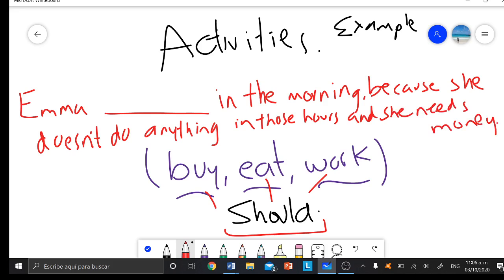This is just an example. Let's suppose that I have this: Emma lying in the morning because she doesn't do anything in those hours and she needs money. Emma lying en la mañana porque no hace nada, she doesn't do anything en esas horas, and she needs money, y necesita dinero. So what can we say? Emma debería comprar en la mañana, debería comer en la mañana, o debería trabajar en la mañana?